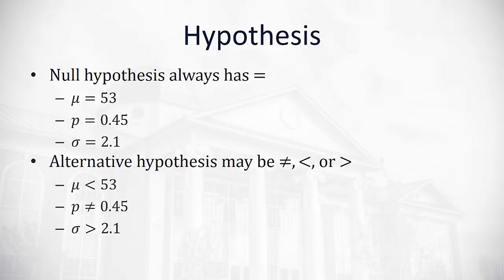The alternative hypothesis is what we're trying to show. So for example, if we claim the null hypothesis is μ equals 53, the alternative might be we're trying to prove it's less than 53. Or if the null was that the proportion p equals 0.45, the alternative we're trying to prove that it's not equal to 0.45. It might be lower or higher, but we're just trying to prove it's not 0.45. Or if we had our claim of σ at 2.1, we might be trying to prove that it's actually greater than 2.1.